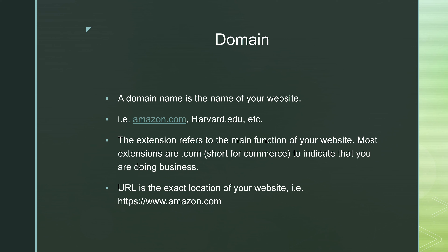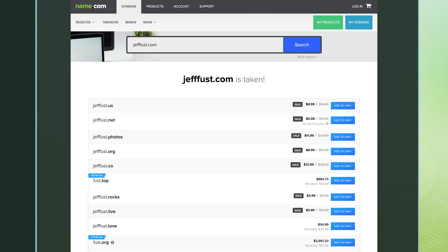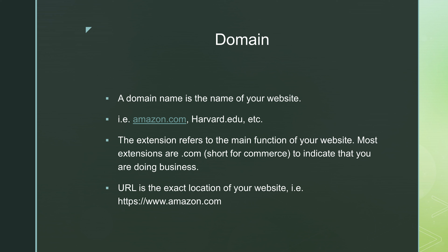A domain name is exactly what it sounds like — it is the name of your website. For instance, Amazon has amazon.com and Harvard has harvard.edu. When you look for a domain, it doesn't really matter where you buy it. There are lots of companies that sell domains. One of the first steps is to search for your domain name to find out if it's available, and if it is, you can purchase it. This is something you purchase annually.